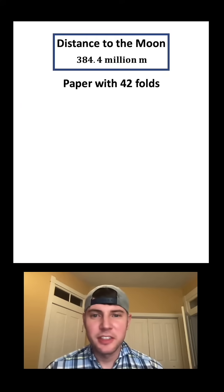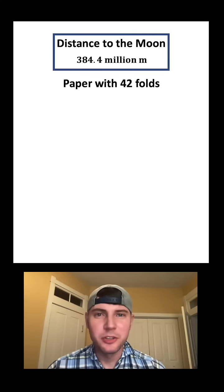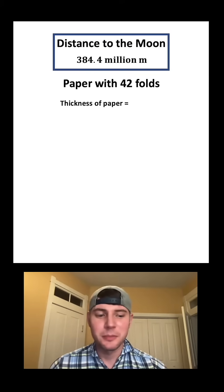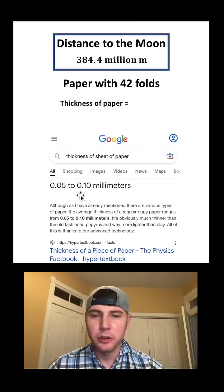Next we've got to find the thickness of a piece of paper with 42 folds. First off, what is the thickness of a single piece of paper? If we google that, it says 0.05 to 0.1 millimeters, so it's somewhere in this range.